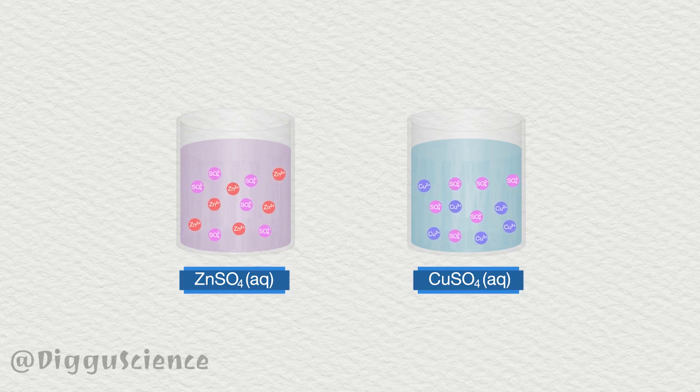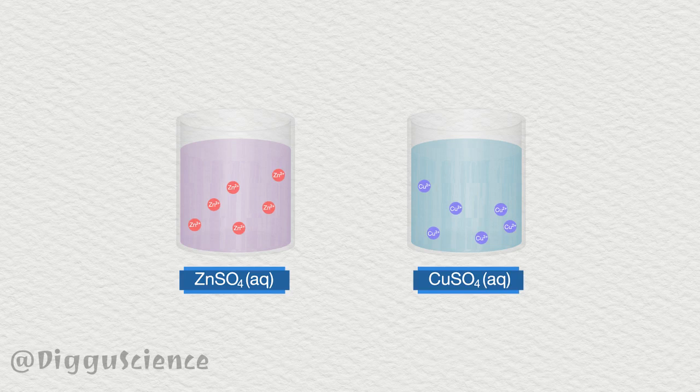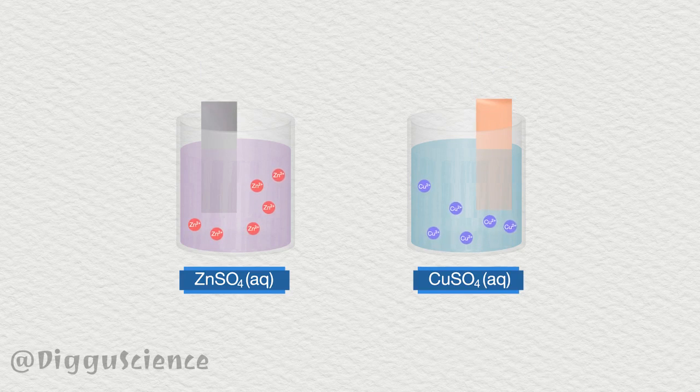Sulfate ions can be said to be spectator ions. For the time being, this ion can be ignored. Next, the zinc sheet is dipped in a zinc sulfate solution, and the copper sheet is dipped in the copper sulfate solution.